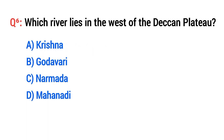Question number six: Which river lies to the west of the Deccan Plateau? The right option is C: Narmada.